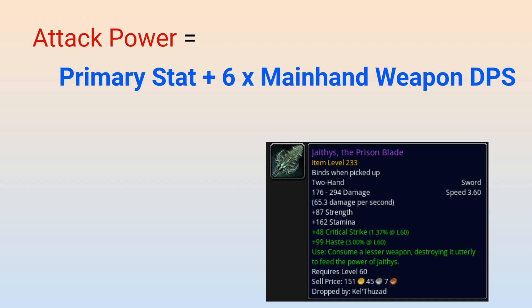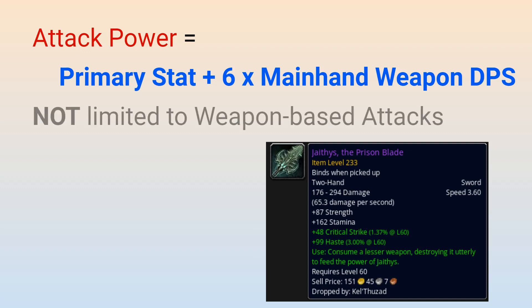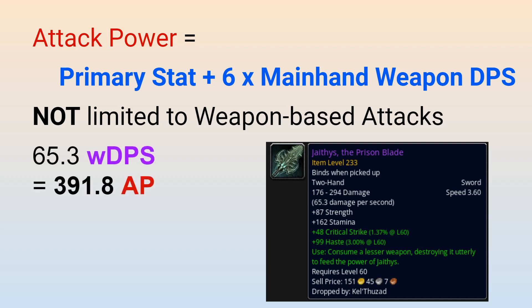This attack power bonus from weapon damage is present for all abilities that non-caster classes use, even if the ability isn't something that you would typically associate with a weapon attack, such as Death and Decay for Blood Death Knights. So if you have a 233 item level weapon with 65.3 weapon DPS, it is providing you with 391.8 attack power from its weapon damage alone on all of your damaging and healing abilities. Meanwhile, the 87 strength from this weapon would only be providing you with 87 attack power, not accounting for any strength multipliers your character may have.